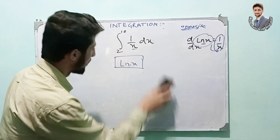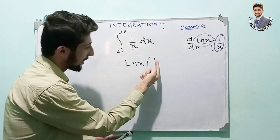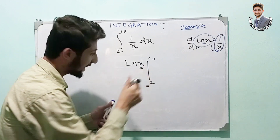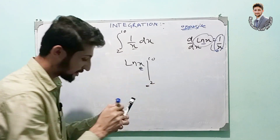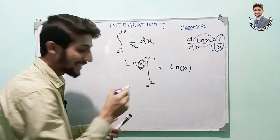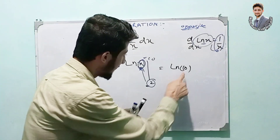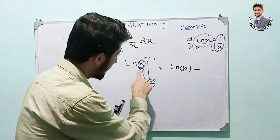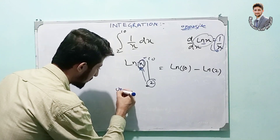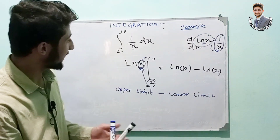From the open interval we get ln x. From the closed interval we get the same ln x, but the difference is that we put the value of the upper limit and the lower limit. We replace x with the upper limit and then subtract the result with x replaced by the lower limit. So it's: ln x evaluated from 2 to 10 — upper limit minus lower limit. That is the concept.